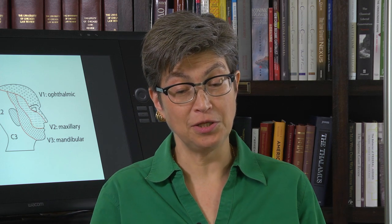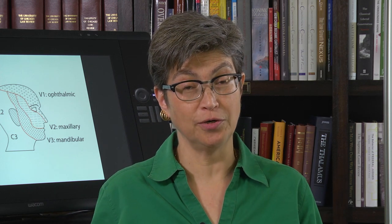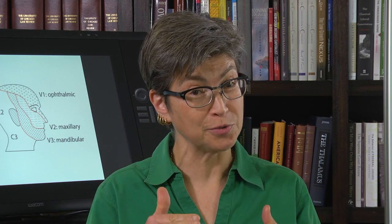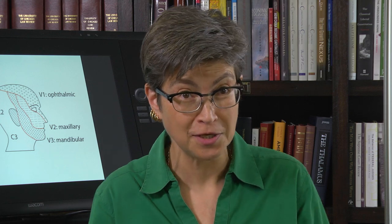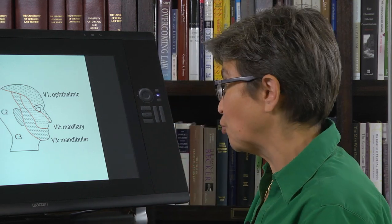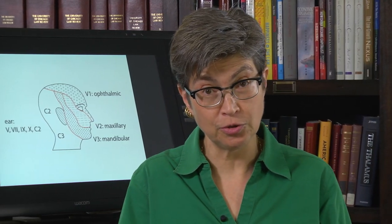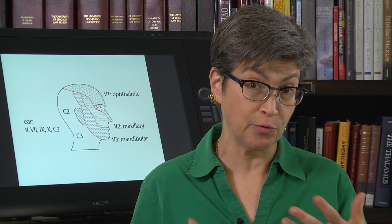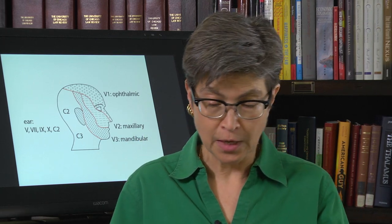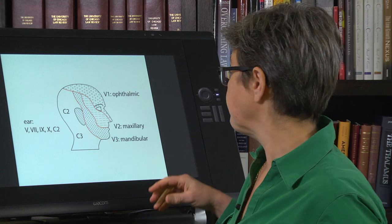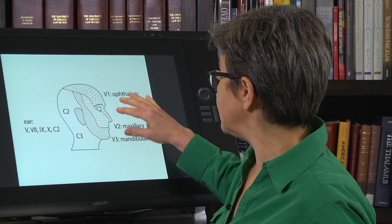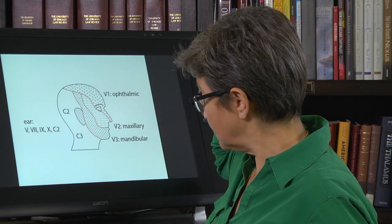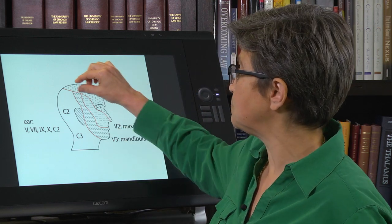Now that we've passed the eye part of the cranial nerves, we are over the hump — we're on the home stretch. We're on to the trigeminal nerve, which carries all the sensory information from the face, from the oral cavity, from the anterior meninges, and so on.